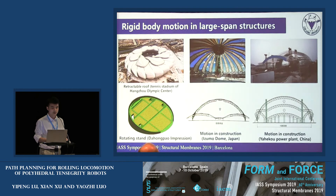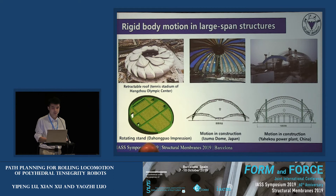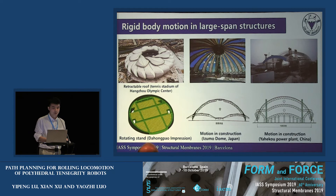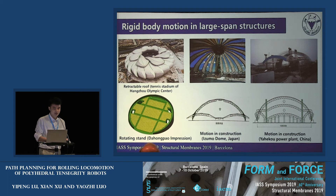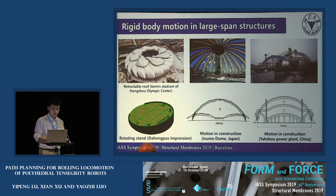In the field of modern architecture, large span structures have attracted much attention. They are applied to stadiums, theaters, museums, and other public buildings. Among these, some structures with rigid body motion enrich our imagination of architectures. For example, the tennis stadium of Hangzhou Olympic Center has a retractable roof which can be controlled if needed. In Fujian, China, a rotating stand called Da Hong Pao Impression is constructed.